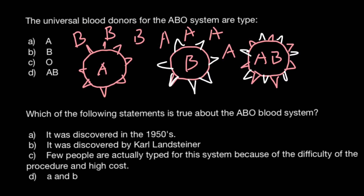In the blood serum of blood group AB we wouldn't find either antibodies B or antibodies A — otherwise they would fight their own blood cells and destroy them. The last blood group is blood group O, and in this blood group we wouldn't have any antigens A or antigens B.